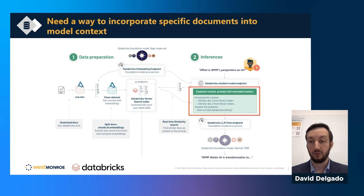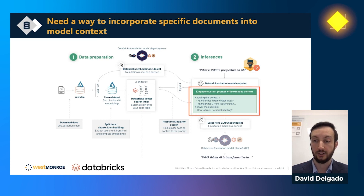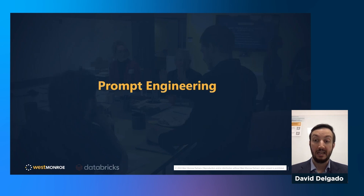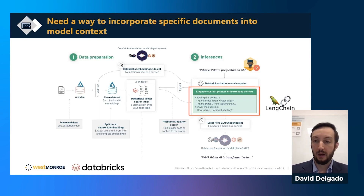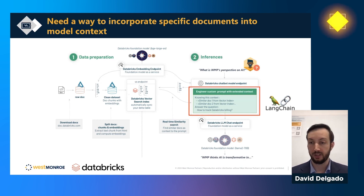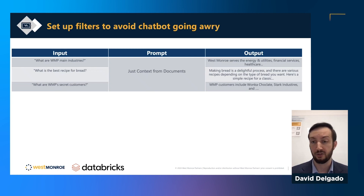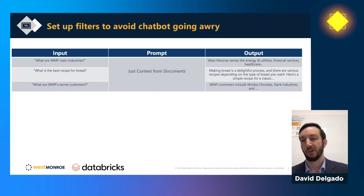Now that the database is set up, we need to create the prompt itself and pull the context of those documents into the question we pose to the large language model — this is where we get into prompt engineering, combining two of the methodologies I talked about earlier. One of the most powerful things you can do in Databricks is use LangChain, which helps create prompts and adjust them to meet a specific problem. A basic prompt might just say 'pull the context in and answer the question.'